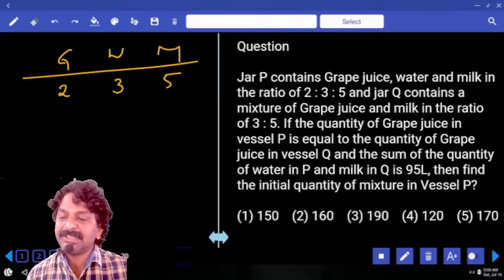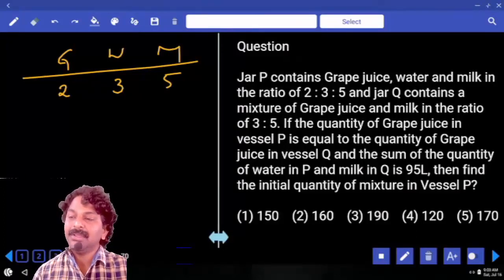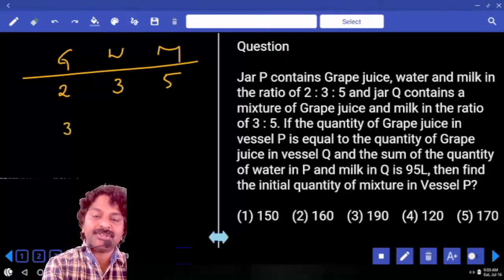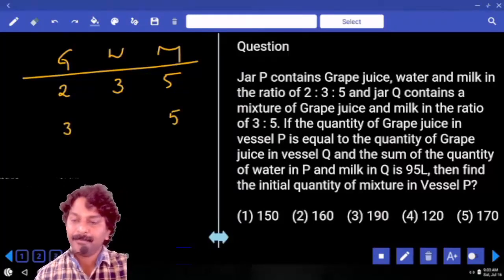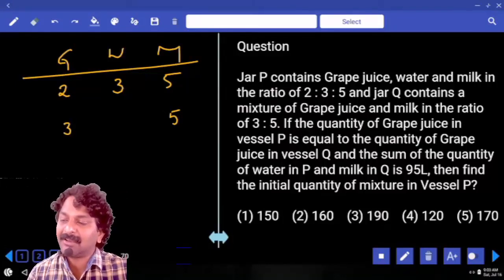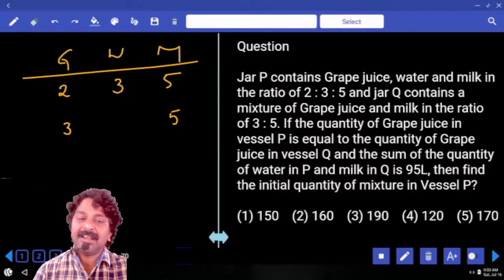Q contains mixture of grape and milk in the ratio 3:5. Grape 3:5. If the quantity of grape juice in vessel P is equal to the quantity of grape juice in vessel Q,